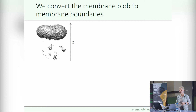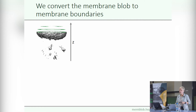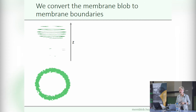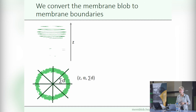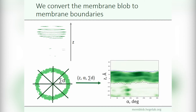Now that we have the membrane blob, we can convert it to transmembrane regions. To do this, we make a two-dimensional projection of the membrane blob. First, we generate the x-y sections of the blob along the z-axis. Then, we cut these sections into angular slices like a cake and sum the density values in each slice. This way, we get an array of density values for every z-angle pair. This array is smoothed and presented in two dimensions.